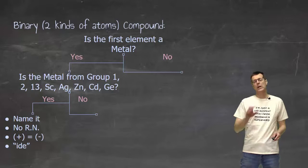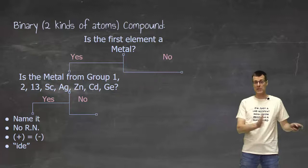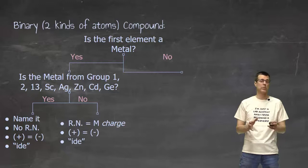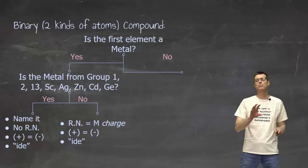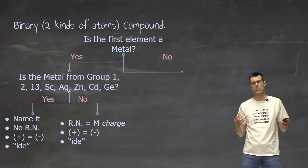If, going back to that previous question, is the metal from one of those special groups, if that answer is no, it's definitely a metal, but not one of the special metals, then we have to start looking at Roman numerals, where the Roman numeral is the charge on the metal. And that's all it is. That Roman numeral does not necessarily need to show up anywhere in the formula. It doesn't need to, quote-unquote, make any sense.